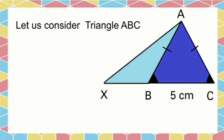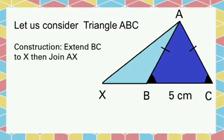Let us consider a triangle ABC. By construction, we have extended side BC to X and then joined A and X.